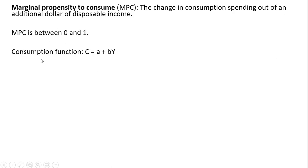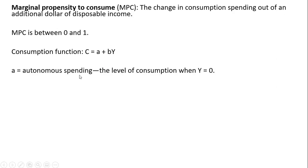If we take our standard consumption function — consumption equals A plus B times Y — where C is consumption spending, Y is disposable income, and A represents autonomous spending, the level of consumption when income is 0. B, the slope of this function, will represent the marginal propensity to consume.